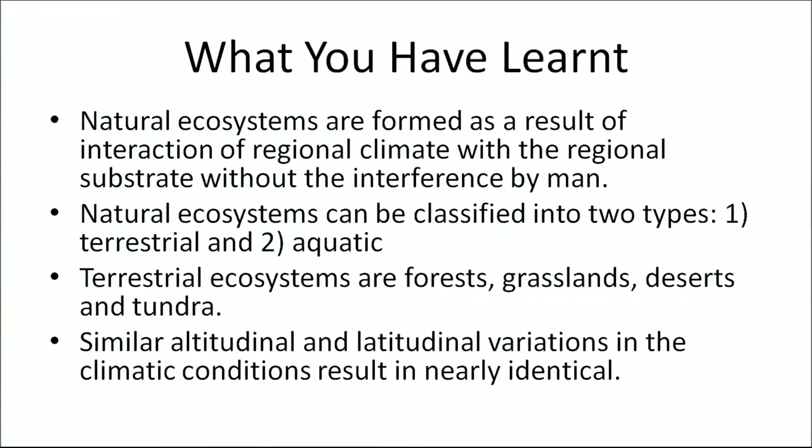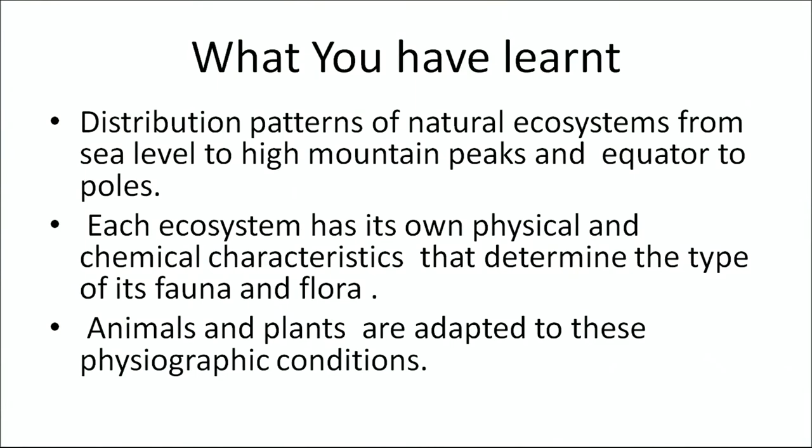Thank you Dr. Lakshmi for sharing information related to natural ecosystems such as forests, deserts and grasslands. Before we wrap up, let us recap the main points. Natural ecosystems are formed as a result of interaction of regional climate with the regional substrate without interference by man. Natural ecosystems can be classified into two types: terrestrial and aquatic. Terrestrial ecosystems include forests, grasslands, desert and tundra. Similar altitudinal and latitudinal variations in climatic conditions result in nearly identical distribution patterns of natural ecosystems from sea level to high mountain peaks and from the equator to the poles. Each ecosystem has its own physical and chemical characteristics that determine the type of fauna and flora, and animals and plants are adapted to these physiographic conditions.